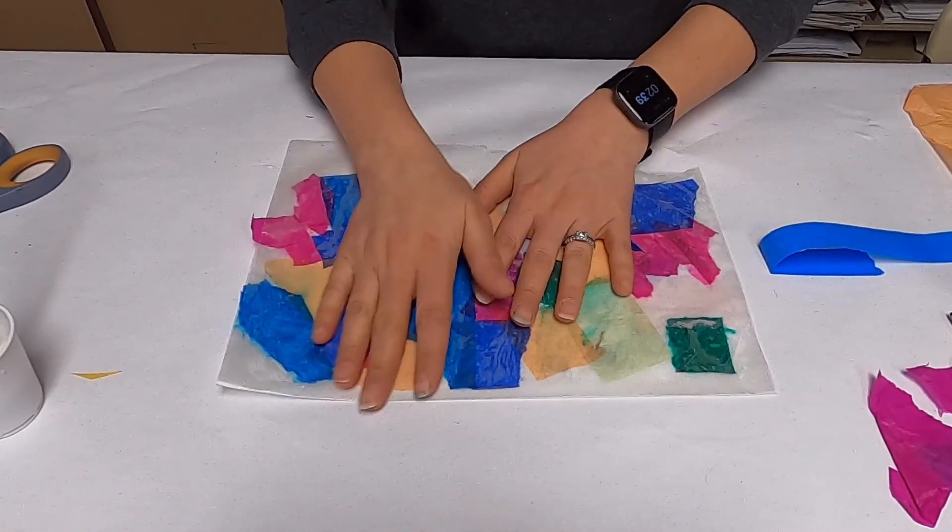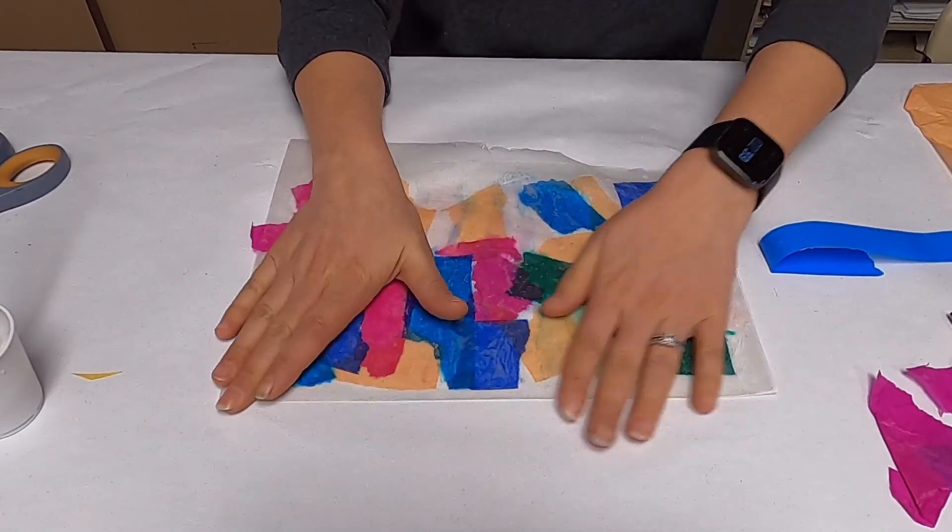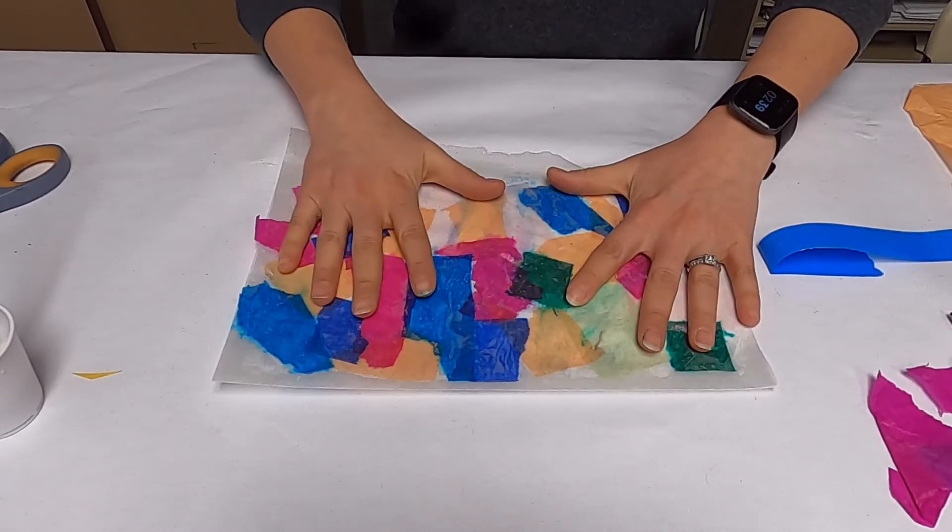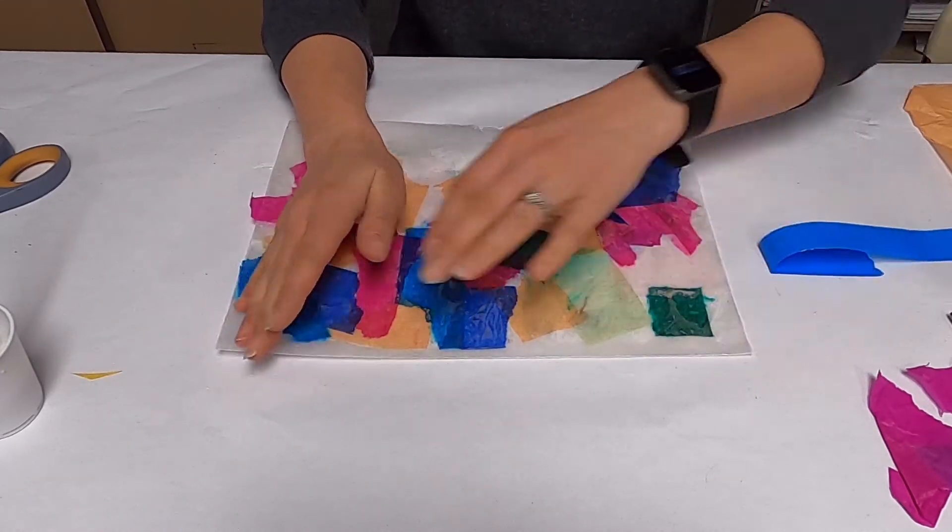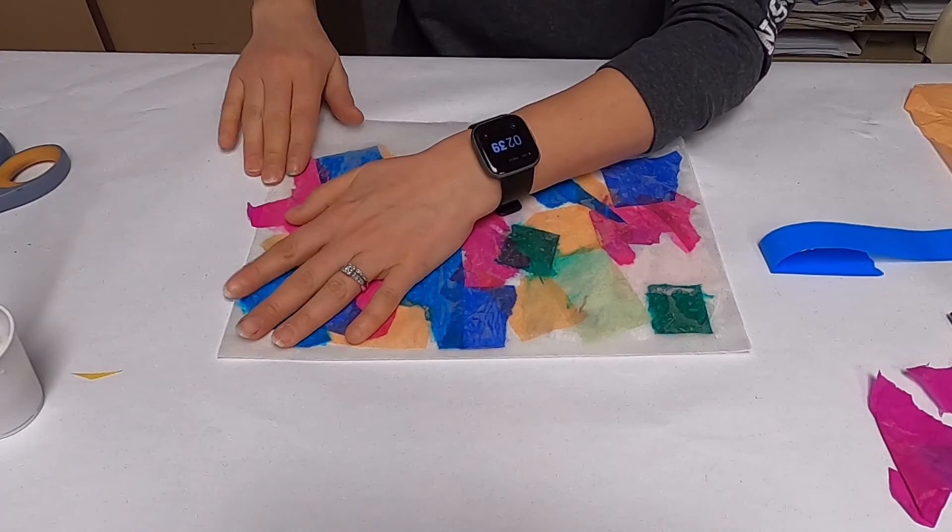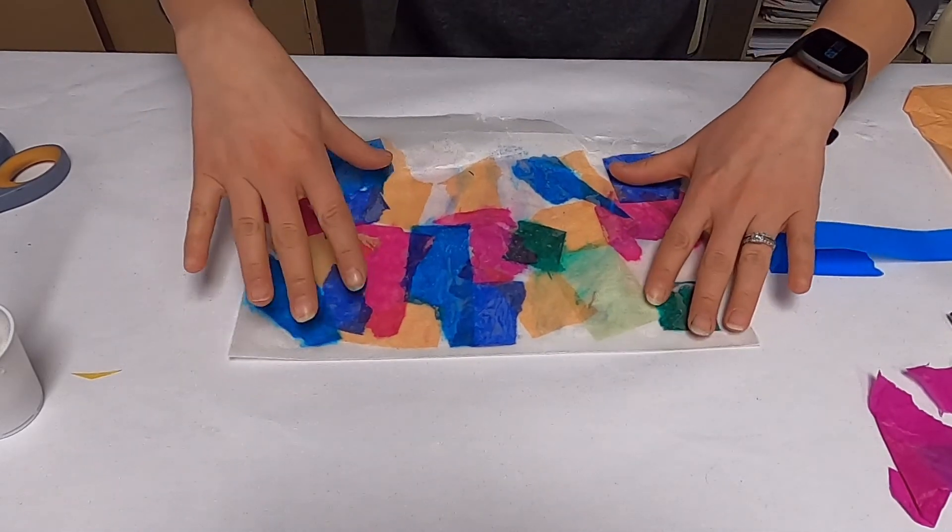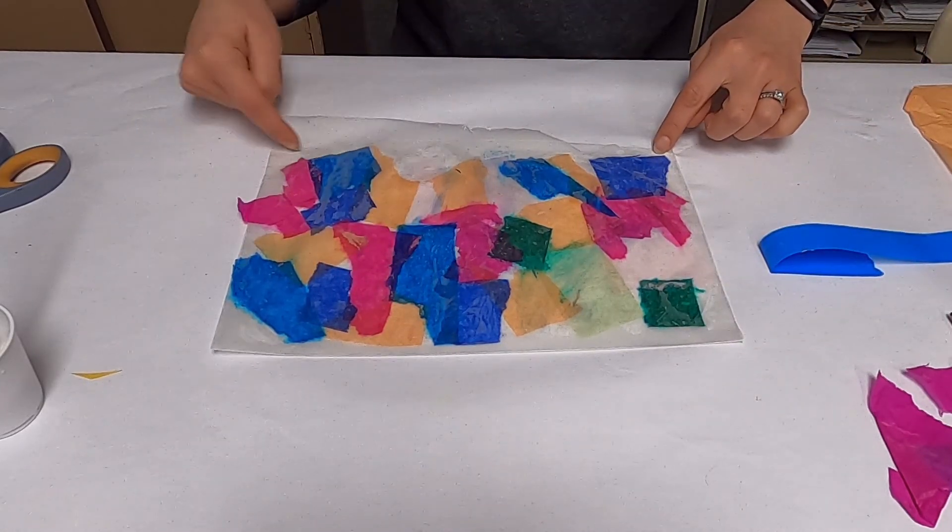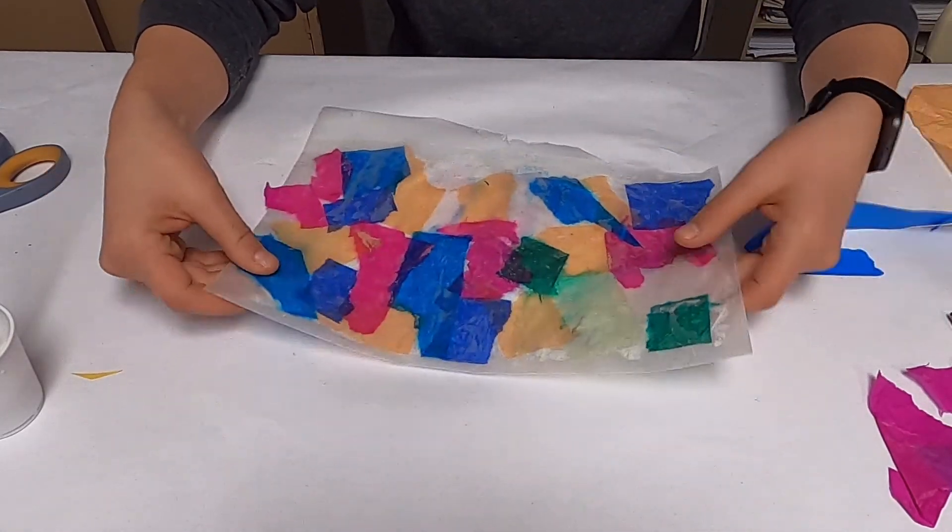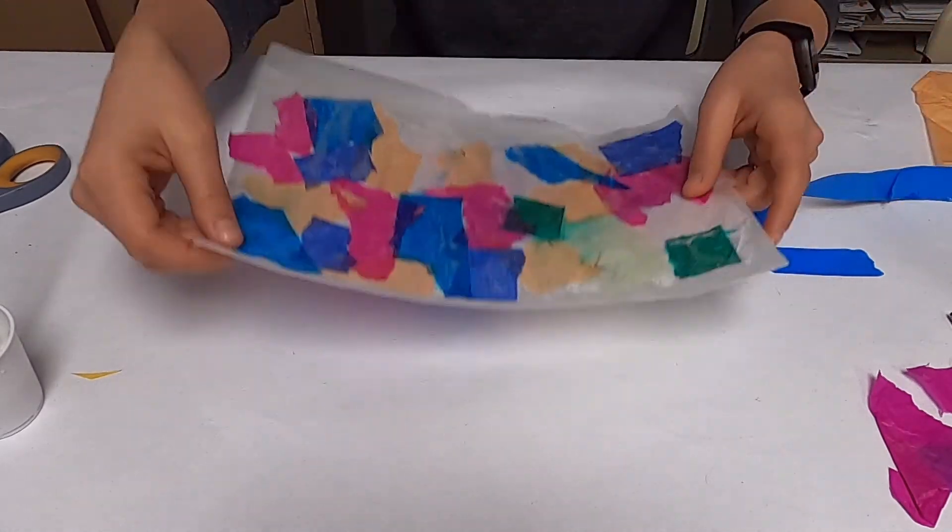Keep it flat until it dries - you might put something heavy on top like a book. Wipe off any excess glue from the sides, then lay it flat to dry. Once it dries, trim it with scissors so it's nice and square, then hang it in your window to let sunlight show through.